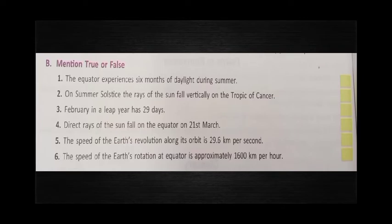For example, 2016 was a leap year, so 2016 had 366 days. We don't add the extra day in 2017, 2018, or 2019 — we add it in the next fourth year, which is 2020. That extra day is added to February. So the answer is true — February in a leap year has 29 days.